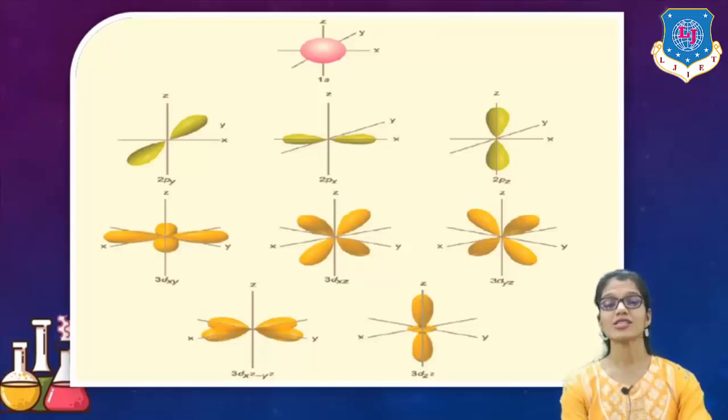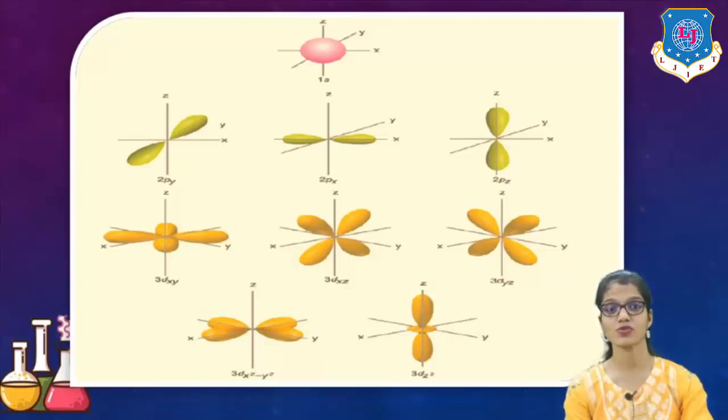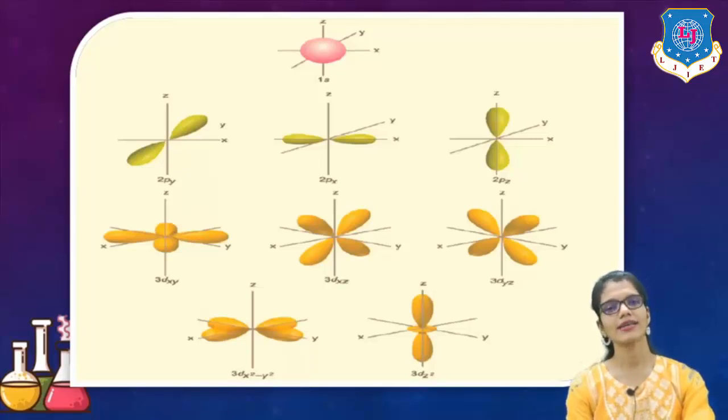Now the last one: F orbital, which is far away from atomic nucleus, can be divided into seven different types. It has a very complex structure or very complex shape because it involves different kinds of orbitals in different directions. So the maximum number of electrons which are possible is 14. 7 into 2, it is most far away from the atomic nucleus.